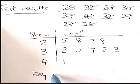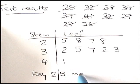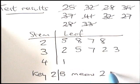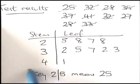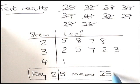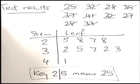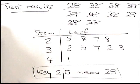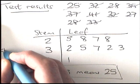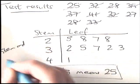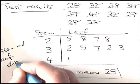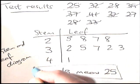Every stem and leaf diagram also needs a key. Choose any number — the first number is 2, then the vertical line, then 5 — and that means 25 in this example. You always need this key because a 2 and a 5 might not always mean 25; it could mean 2.5 or 2500. Copy down this stem and leaf diagram with the key, and then we're going to change it to an ordered stem and leaf diagram.